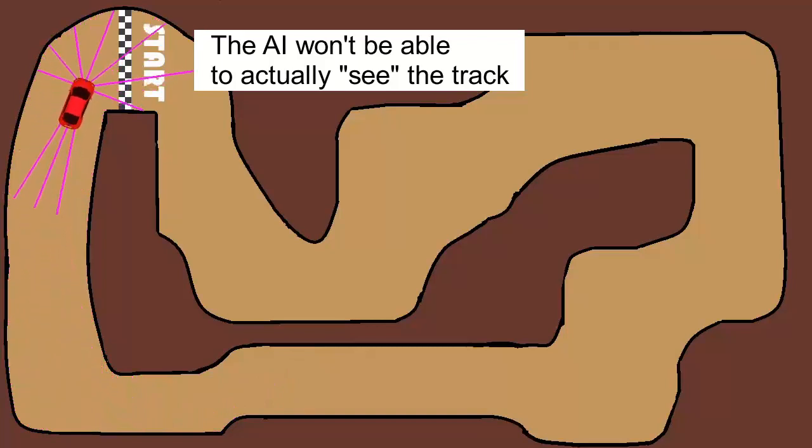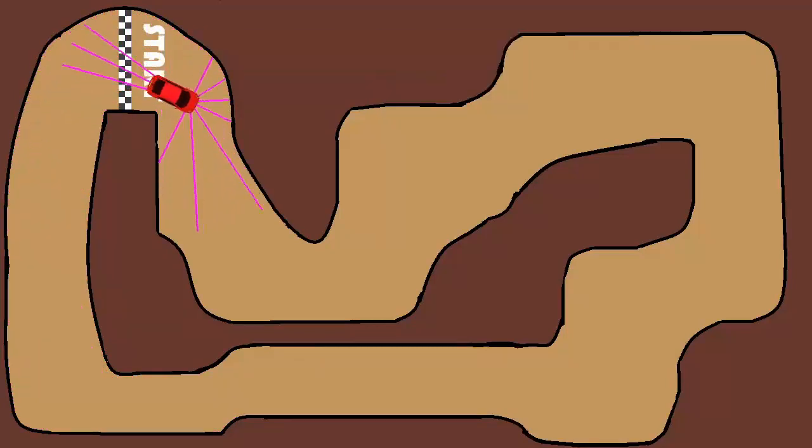I'm giving it, I think, seven lines in front of it and three lines behind that it will be able to use to determine what it wants to do.